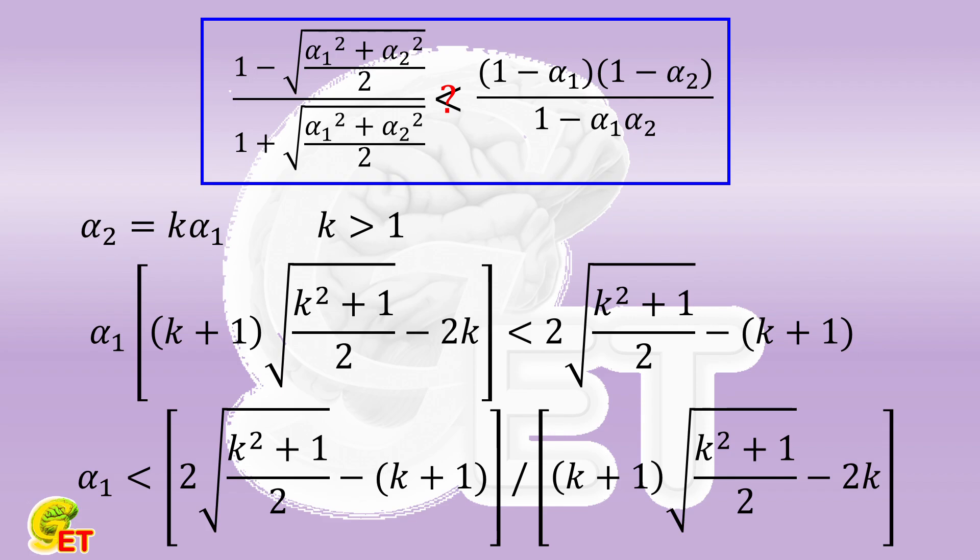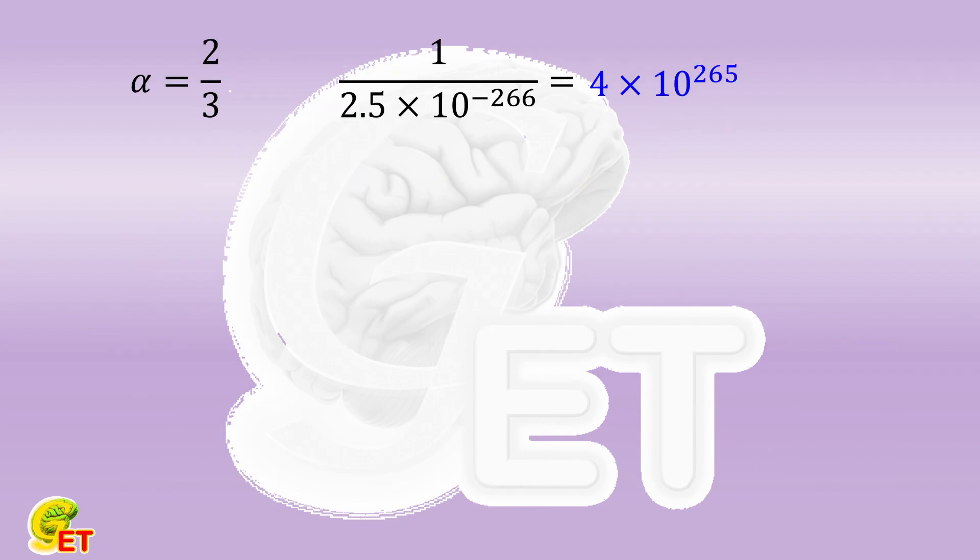So how much impact will the difference in team strengths and shapes in a game have on the probability of winning the championship with all games ending in a draw in a full season? In our previous example, if α equals 2/3, it would take an average of more than 10 to the power of 265 seasons to see such a champion.